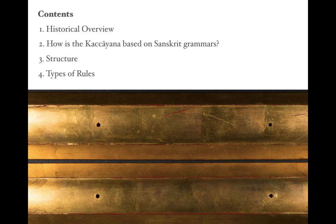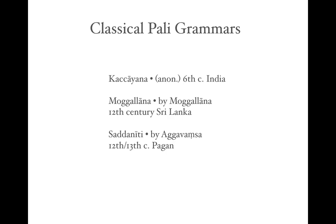We begin with a historical overview. Looking at the Pali grammatical traditions, we have three main treatises. The Kaccayana is anonymous, although it is traditionally ascribed to Maha Kaccayana, the disciple of the Buddha. However, there are many reasons to believe that is not possible, so it is usually dated to the 6th century common era and was probably composed in India.